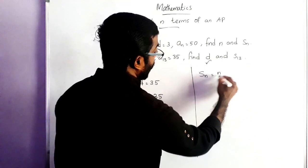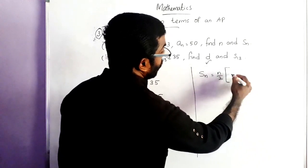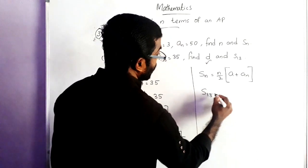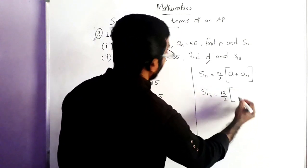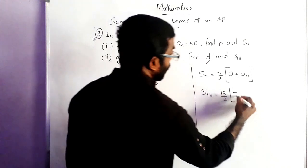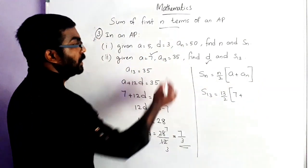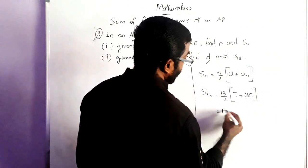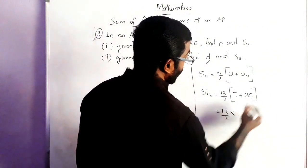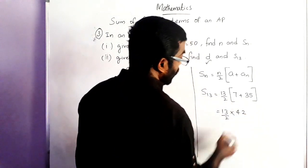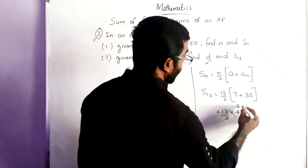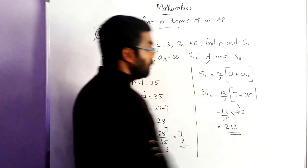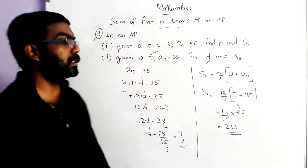Then S13. S_N is equal to N by 2 into A plus AN. So S13 is equal to 13 by 2 into A is 7 and AN here means A13, which is 35. So 7 plus 35. That is 13 by 2 into 42. The 2 and 42 cancel to give 21. And 13 into 21 is 273. The final answer is 273.